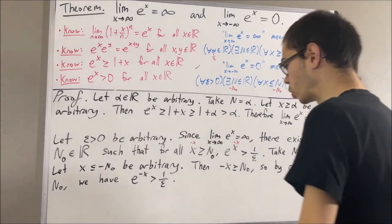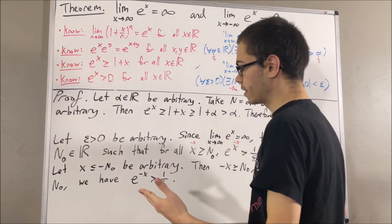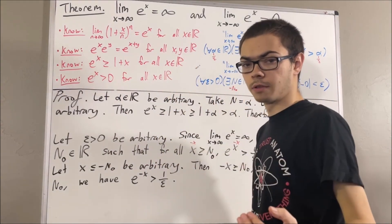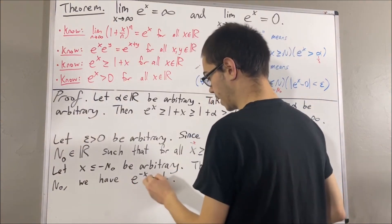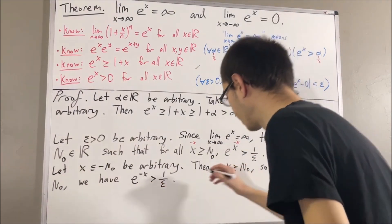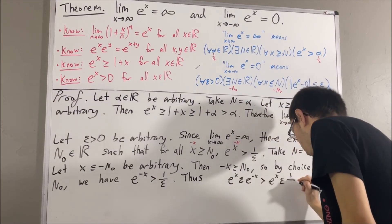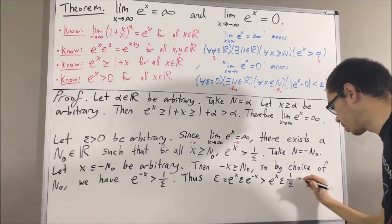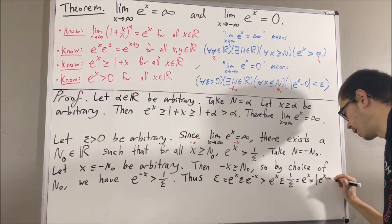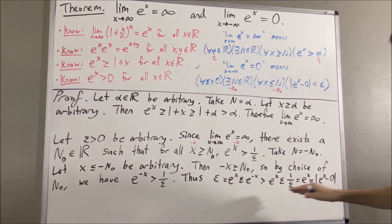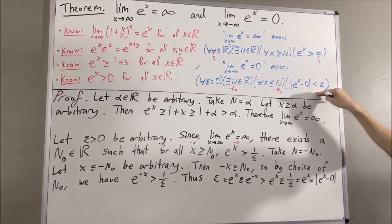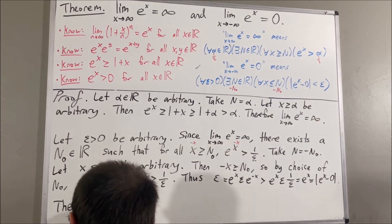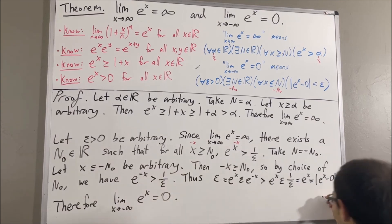All we have to do is multiply both sides of this inequality by e to the x times epsilon. Remember, e to the x is greater than zero for all real numbers x, so e to the x times epsilon is positive. If we multiply both sides by e to the x times epsilon, the sign of the inequality remains the same. Doing that, the left-hand side simplifies down to epsilon, and the right-hand side simplifies down to e to the x. And e to the x is just the absolute value of e to the x minus zero. So we have the absolute value of e to the x minus zero is less than epsilon, which is exactly what we wanted. We have proven this statement, which proves the limit as x approaches negative infinity of e to the x is equal to zero. This completes the proof.